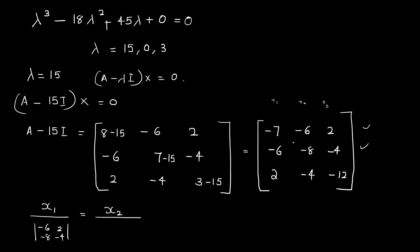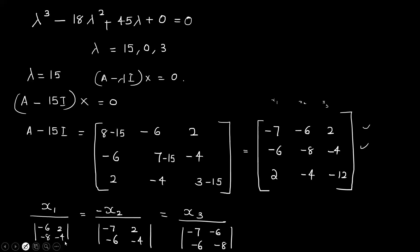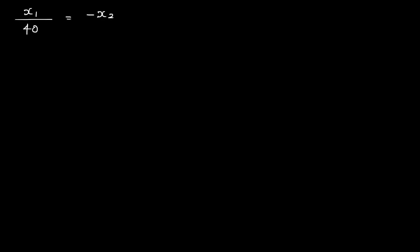x2 divided by: submatrix entries minus 7, 2, minus 6, minus 4. Equal to x3 by: entries minus 7, minus 6, minus 6, minus 8. The computed value gives x1 divided by 40, minus x2 divided by 40, x3 divided by 20.